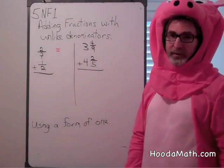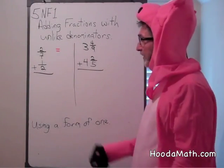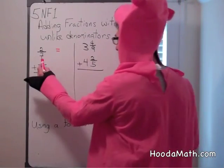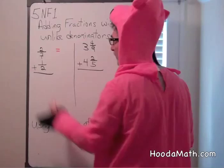Adding fractions with unlike denominators. Denominators are the bottom numbers in a fraction. In this case, we have 7 and 2.